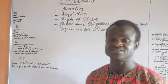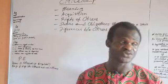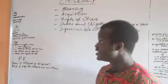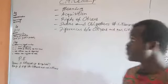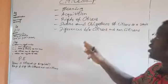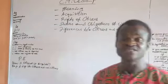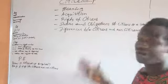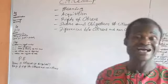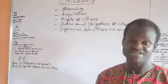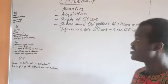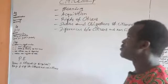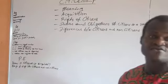Dual citizenship means you can be a citizen of two countries and so on and so forth. Now, what are the rights of citizens? Once an individual becomes a citizen of a particular place, there are some rights the person has — such as the right to life.